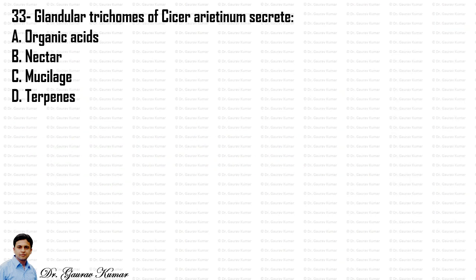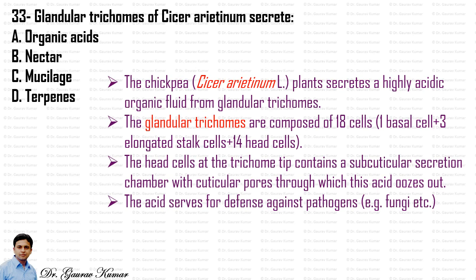The glandular trichomes of Cicer arietinum, which is also called chickpea, secrete a highly acidic organic fluid. The glandular trichomes are composed of 18 cells: 1 basal cell plus 3 elongated stalk cells plus 14 head cells. The head cells at the trichome tip contain a subcuticular secretion chamber with cuticular pores through which this acid oozes out, and the acid serves for defense against pathogens. So the answer is that glandular trichomes of Cicer arietinum secrete organic acids.